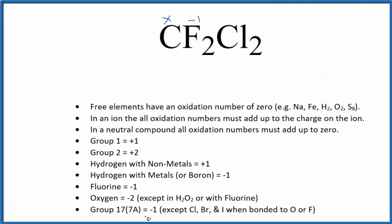And then chlorine. Chlorine is in group 17, sometimes called 7A. It's going to be negative one, except in a few instances where it's bonded to oxygen or fluorine. Because the chlorine is bonded to carbon, it's going to be negative one. So each chlorine will have an oxidation number of negative one.